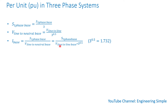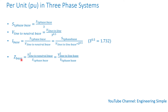For the base impedance, it's either line-to-neutral voltage squared divided by single-phase apparent power, or line-to-line voltage squared divided by three-phase apparent power. It's very important to pay attention to these, because you don't want to mix single-phase and three-phase quantities — you must be consistent in order to get the right numbers.